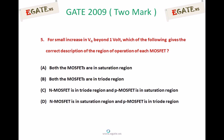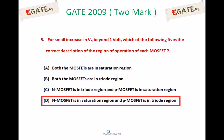A: Both the MOSFETs are in saturation. B: Both the MOSFETs are in triode region. C: NMOSFET is in triode region and PMOSFET is in saturation region. D: NMOSFET is in saturation region and PMOSFET is in triode region. The correct answer is D — NMOSFET is in saturation region and PMOSFET is in triode region.